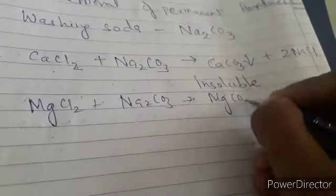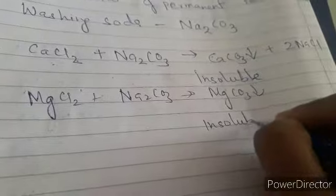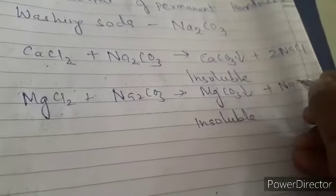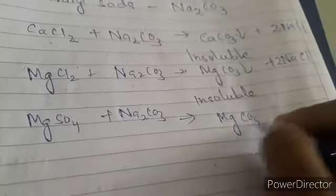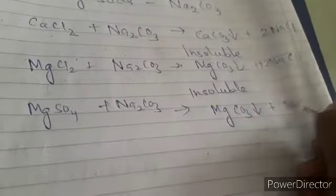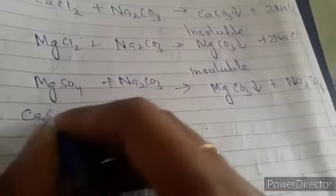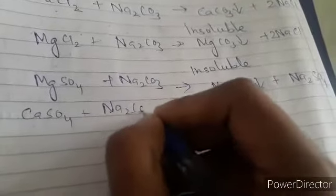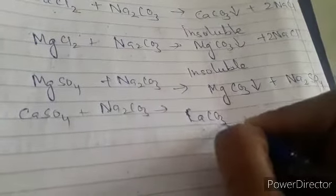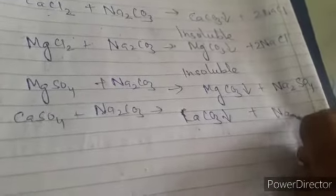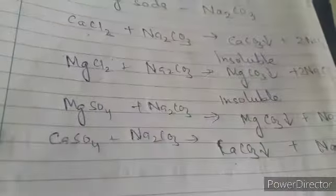Similarly, magnesium chloride reacts with Na2CO3 to give MgCO3 (a white insoluble precipitate) and 2 NaCl. Magnesium sulfate with sodium carbonate gives MgCO3 plus Na2SO4. Calcium sulfate with Na2CO3 gives CaCO3 plus Na2SO4. So all these hardness-causing chemicals can be easily removed.